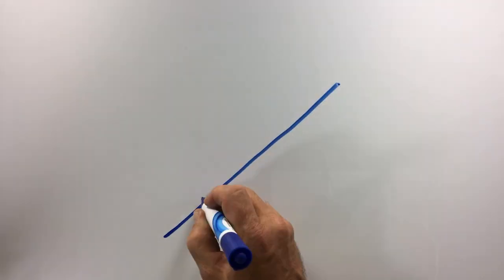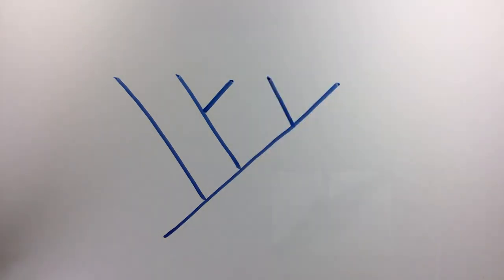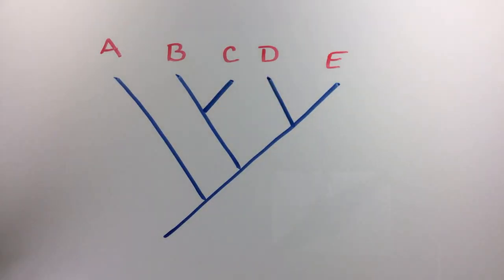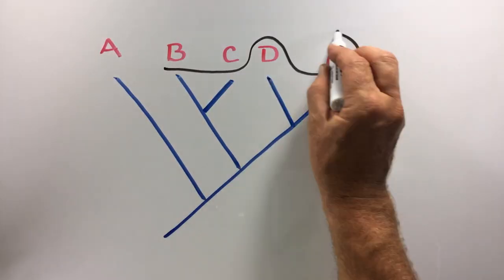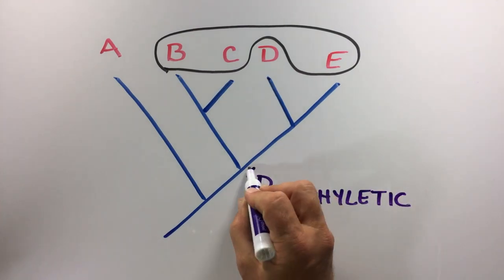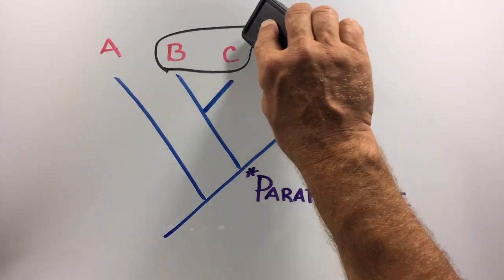These concepts about nodes and lineages are the basis of how modern biologists group species into larger groupings. For example, grouping species B, C, and E into a genus that excludes D would be called a paraphyletic group because it is excluding one of the descendants of these four species' most recent common ancestor.